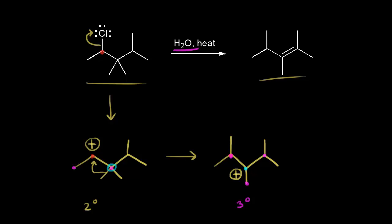At this point, there are two possible reaction paths. Water could function as a nucleophile, which would give a substitution product. But since we need an elimination product — an alkene — water is going to function as a base and take a proton from one of the carbons next door to our carbocation, one of the carbons in magenta.